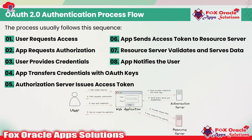Coming to the flow of OAuth 2.0, it includes a few steps. The first step is that the user requires access to the application server, and when they require access, that app server requires authorization. When the app server requires authorization, the client needs to share credentials — and those credentials are not a username and password, but a token. The app or system will transfer the credentials with the OAuth 2.0 key, and then the authorization server will issue a token, based on which it will access the applications.